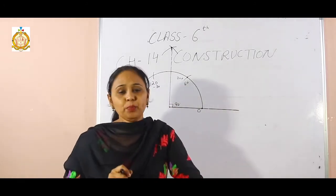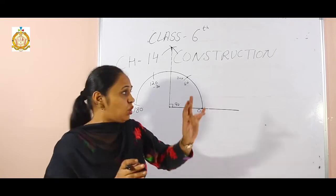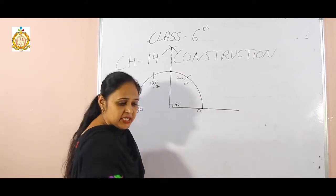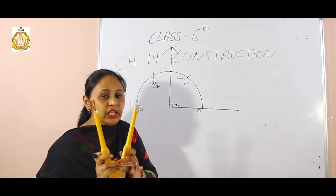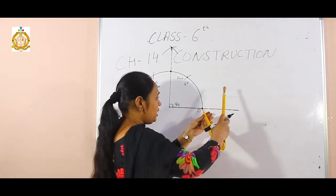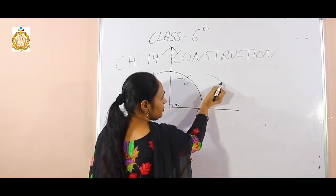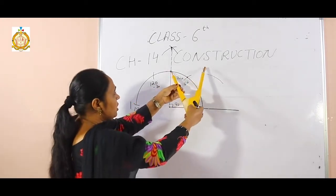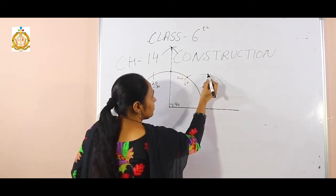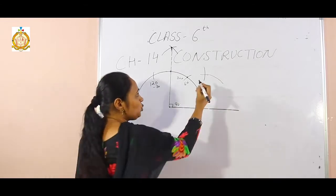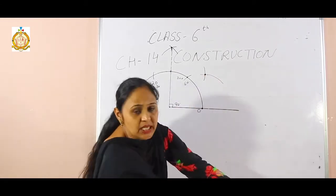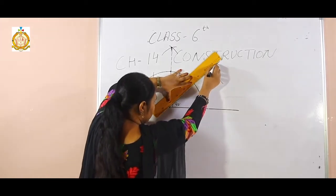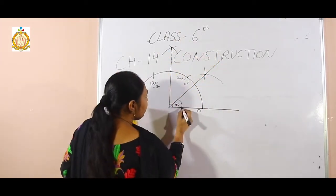But I need 45 degrees. 45 is the middle value between 90 and 0 degrees. So I will use the 90 degree point and the 0 degree point. With the same radius, from 0 degrees I draw an arc, then from 90 degrees I draw another arc. Where the two arcs cut each other is the common point — joining that point to the starting point gives the angle of 45 degrees.